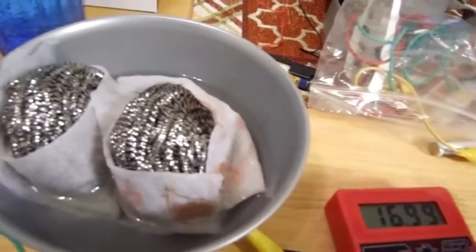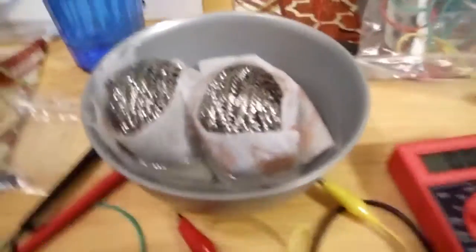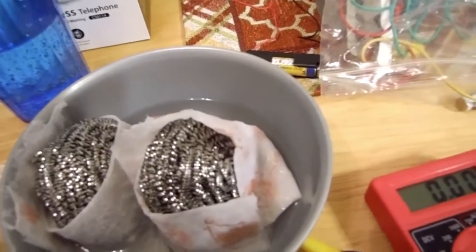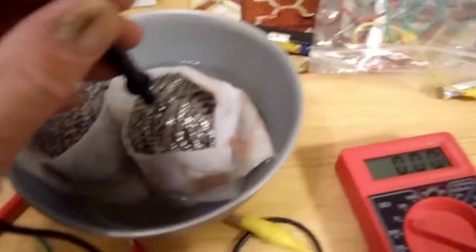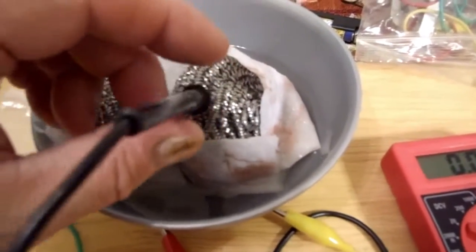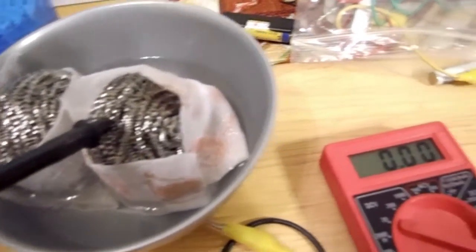Now let's get our multimeter, set for volts. Let's see what we got here. So I think this is my cathode and this is my anode. Let's see. 1.15 volts. 1.16.